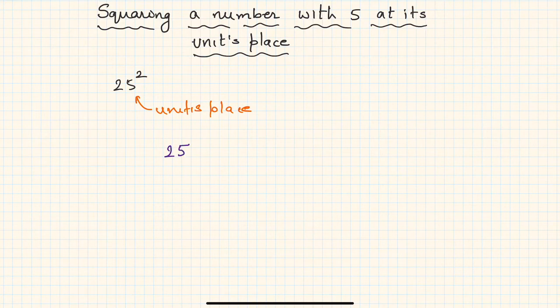For the other digits, this is 2, right? So what you do is multiply 2 with 2 plus 1, that is 3. So you'll get 6, isn't it? Now 25 squared will be nothing but 625.